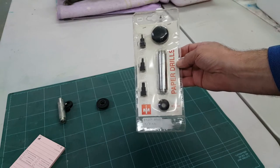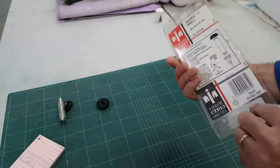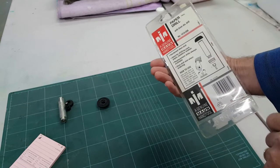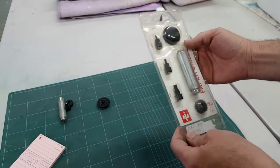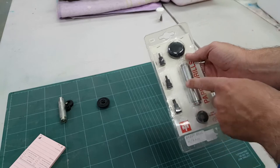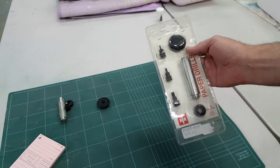This is the paper drill set we sell. It's made by Mon Industries, made in England, and the kit comes with three bits to make six millimeter, four millimeter, and three millimeter holes.